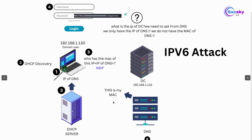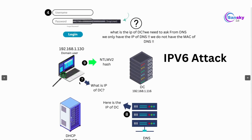Now that the client has the MAC address of the DNS server, it can communicate with it and ask for the IP address of the DC. The DNS server provides the DC's IP address, and finally the system successfully sends the NTLMv2 hash to the DC, gets authenticated, and logs into the domain. That is the normal scenario.